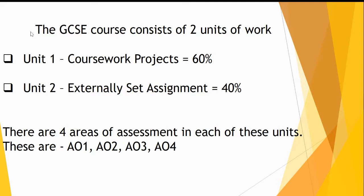Unit 2 is the WJEC externally set exam project. This is presented to students in January as an exam paper — they choose a question and produce a project. It is completed in April for marking and moderating by the WJEC exam board.